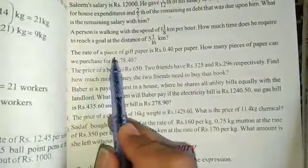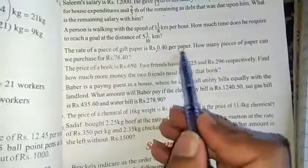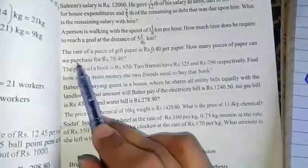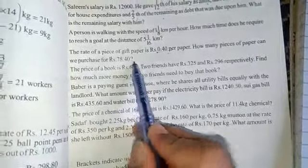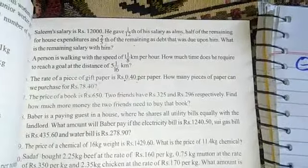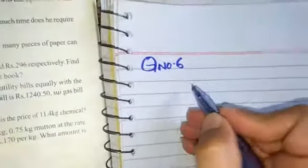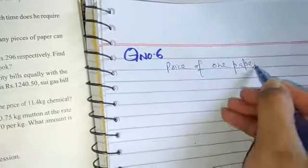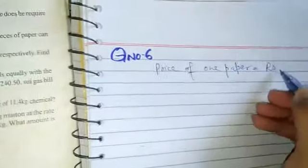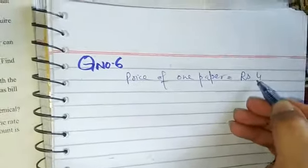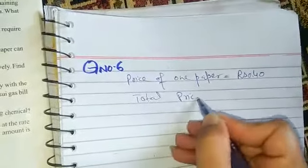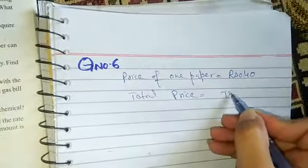Now question number 6: the rate of a piece of gift paper is 0.40 rupees per paper. This is the price of one paper. How many pieces of paper can we purchase for 78.40? So students, price of one paper is rupees 0.40.